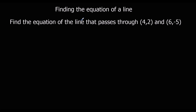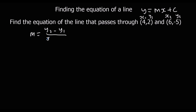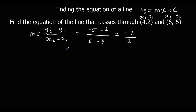Here we've got another example: find the equation of a line that passes through (4, 2) and (6, -5). Again, the equation of a line is y equals mx plus c, and we're going to find the gradient first. So we've got x1, y1, x2, y2. The gradient m is y2 minus y1 over x2 minus x1 — that's minus 5 minus 2 over 6 minus 4. So that's minus 7 over 2, the gradient is minus 7 over 2. So we've got y equals minus 7 over 2 x plus c, and we're going to substitute in some numbers to find c. We'll use (4, 2): so 2 equals minus 7 over 2 times 4 plus c.